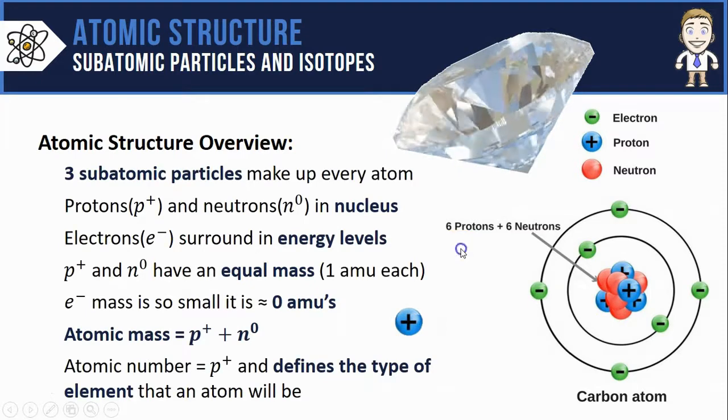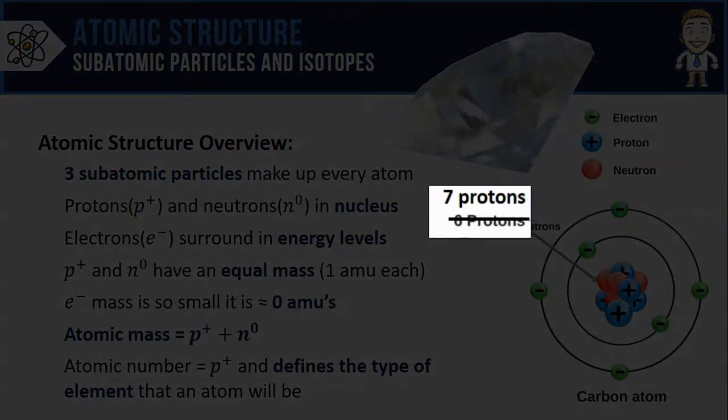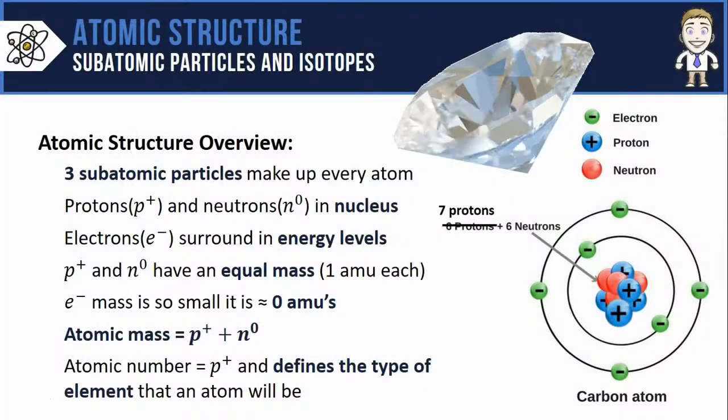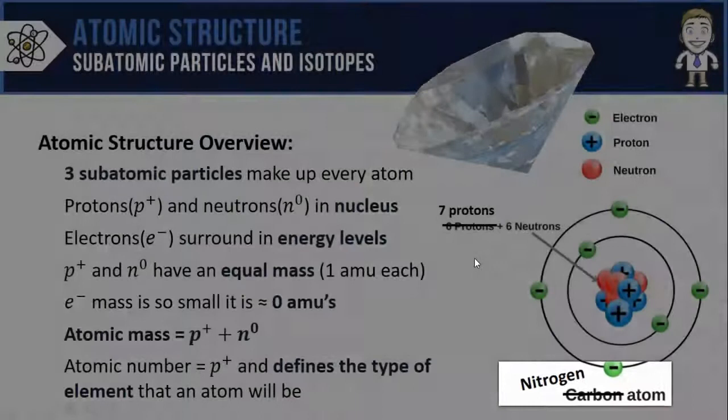If we could somehow add an extra proton to that nucleus, making it go from six to seven - now that there's seven protons, it's a completely different element. In fact, it's no longer carbon, it's now nitrogen.